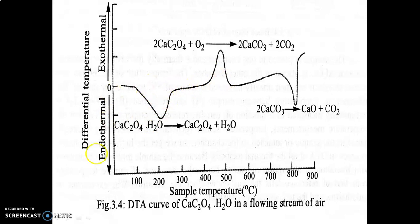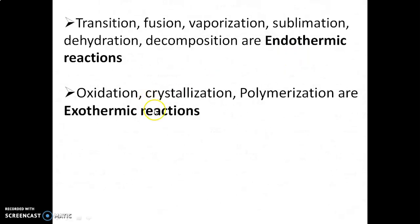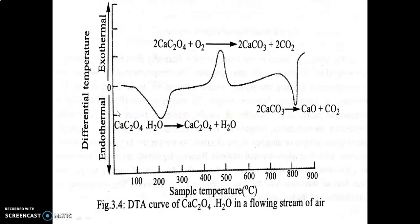From 226 to 346 degrees Celsius there is no change in temperature because there is no chemical change occurring during that period. From 346 to approximately 420 degrees Celsius, we can see an upward curve, which means an exothermic reaction is taking place. From the equation, it is clear that calcium oxalate undergoes oxidation to produce calcium carbonate and carbon dioxide. Oxidation is an exothermic reaction.